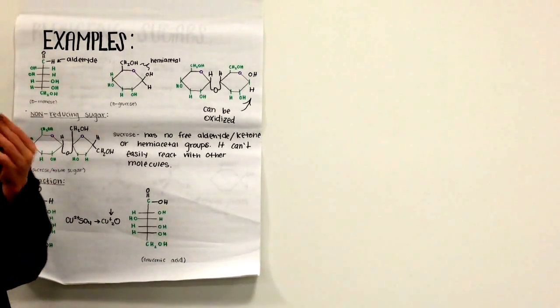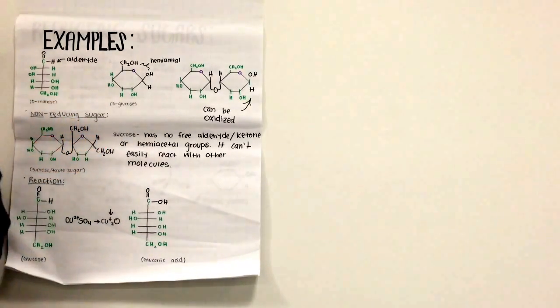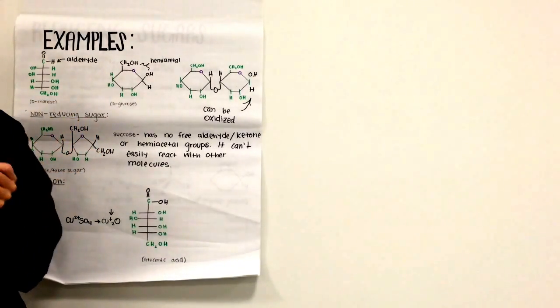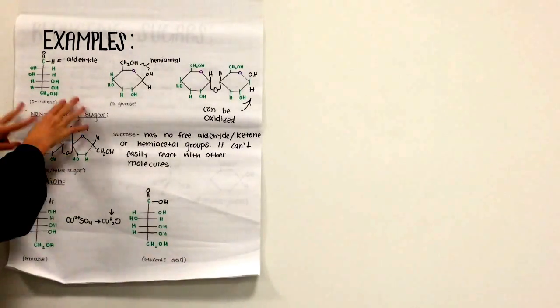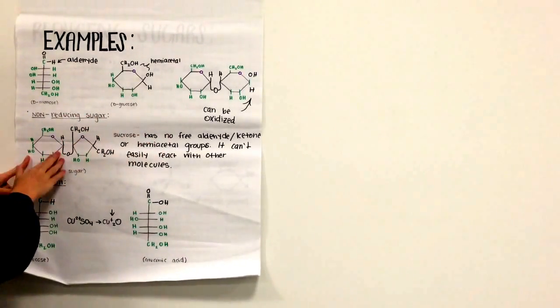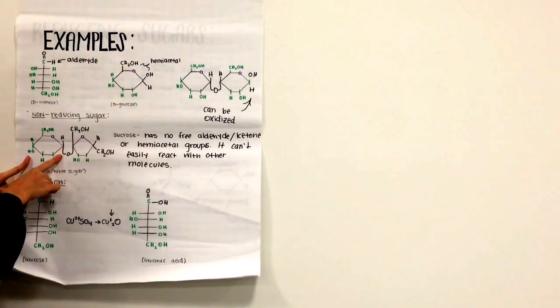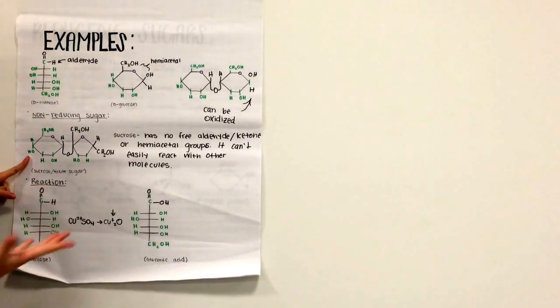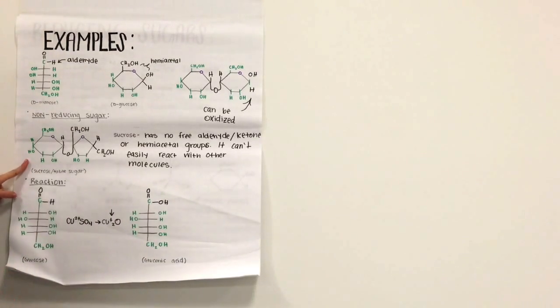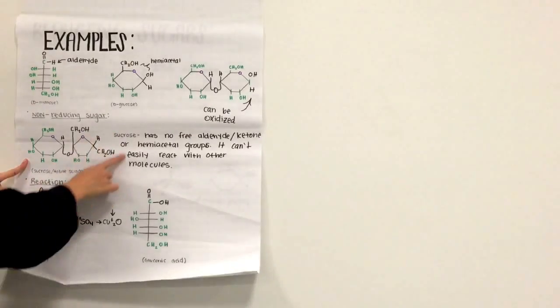Sucrose, table sugar, like the kind you put in your coffee in the morning, sugar in the raw is my example, is not a reducing sugar. As you see, there is no free aldehyde or ketone or hemiacetal groups. There's no carbon bound to both an OH and an OR. It cannot easily react with other molecules, like this one here, that can be oxidized because it's open.